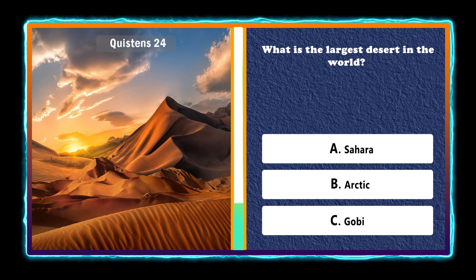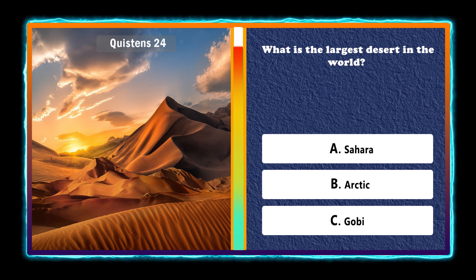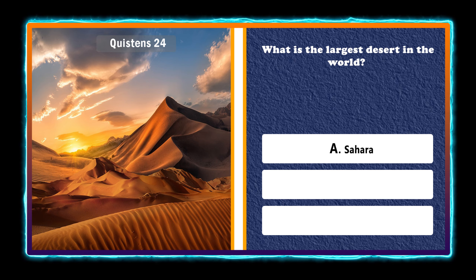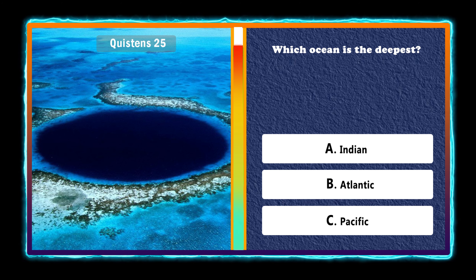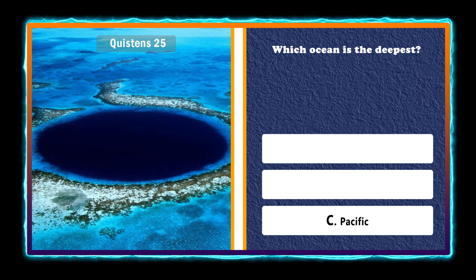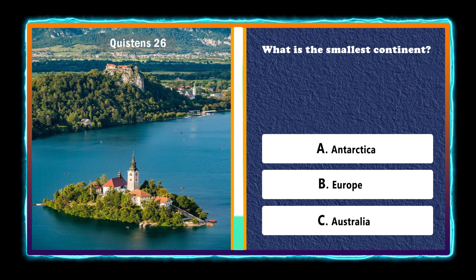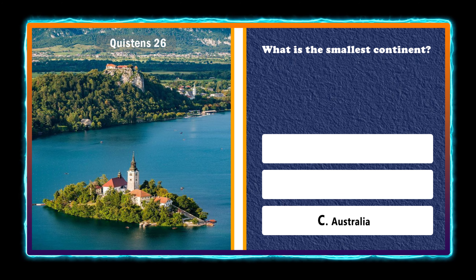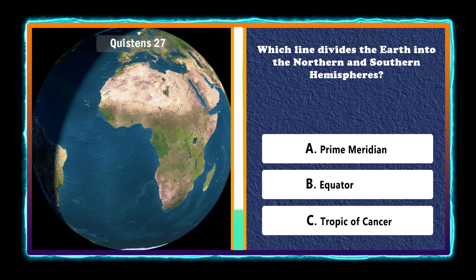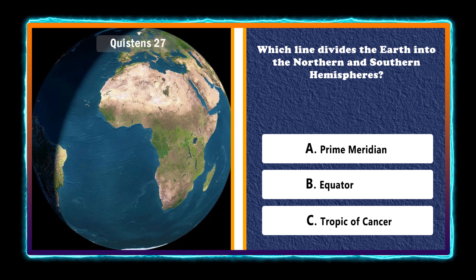What is the largest desert in the world? Sahara. Which ocean is the deepest? Pacific. What is the smallest continent? Australia. Which line divides the earth into the northern and southern hemispheres? Equator.